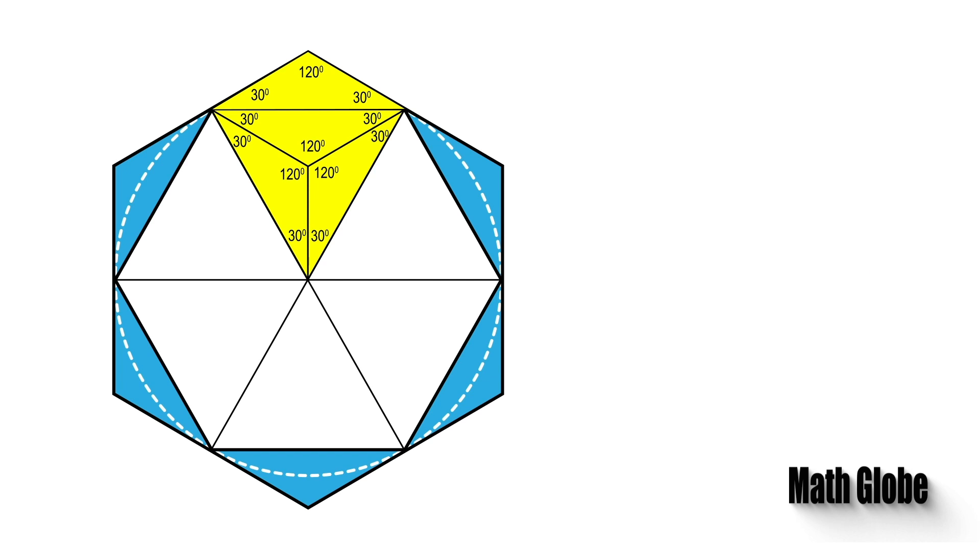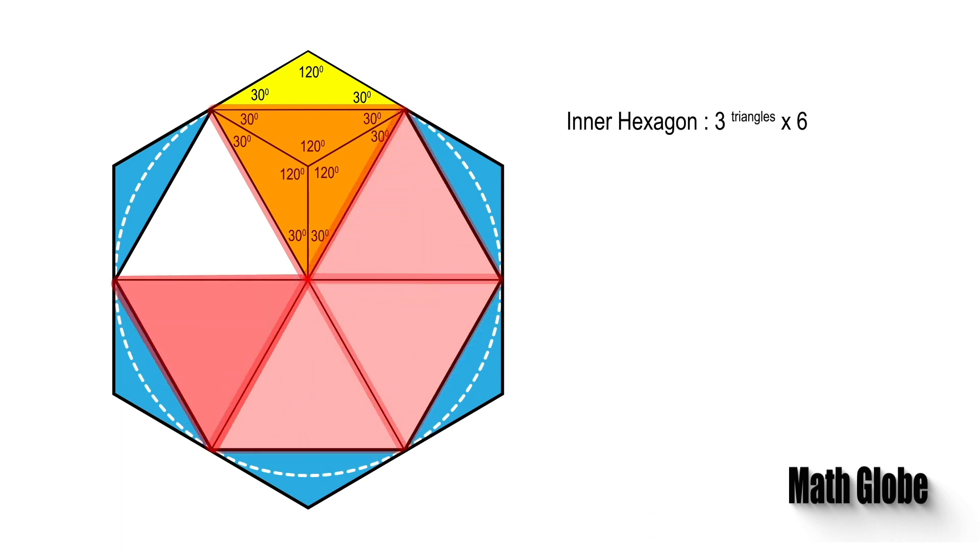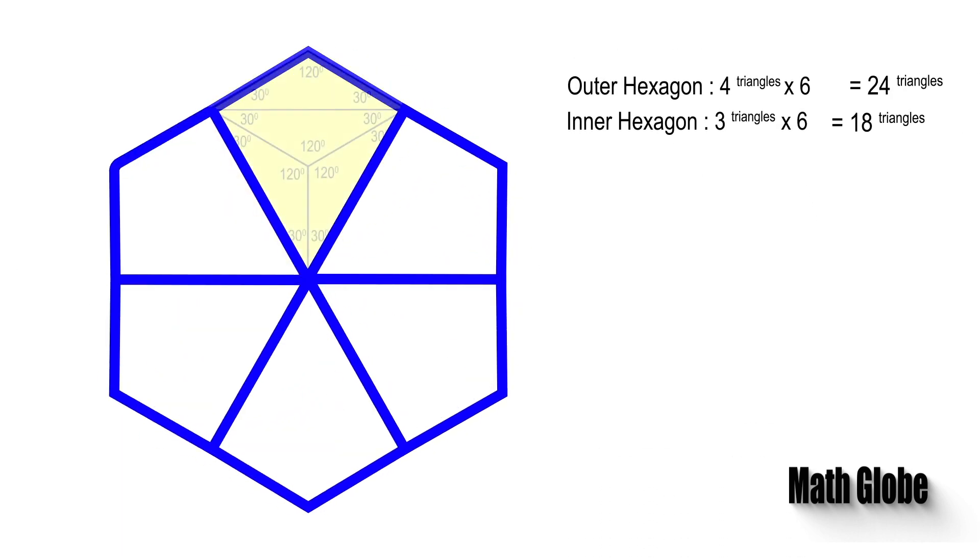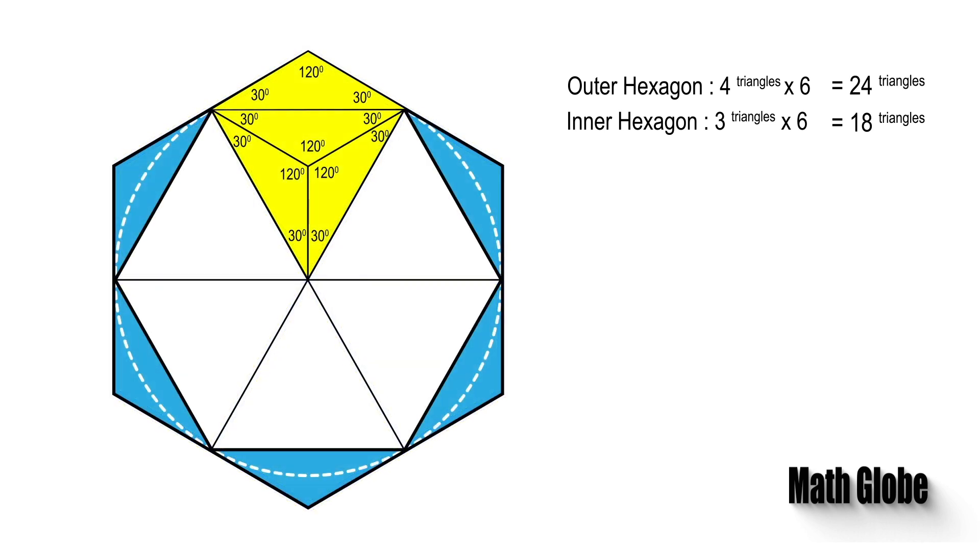Now, next let's count the congruent triangles placed in the inner and outer hexagon. As seen, there are 18 and 24 triangles respectively. From this, the ratio of the areas will be 4 over 3.